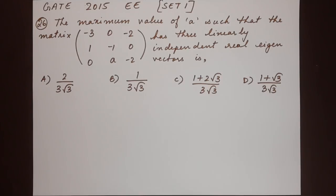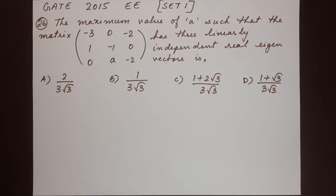Here's question number 26. The maximum value of A such that the three by three matrix has three linearly independent real eigenvectors. We have four options corresponding to the value of A. Let's work it out using the fact that it has three linearly independent real eigenvectors.